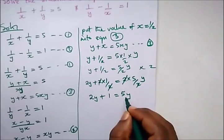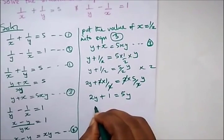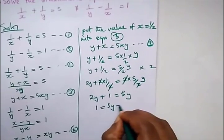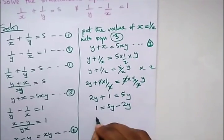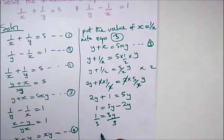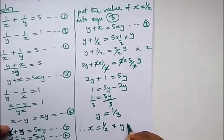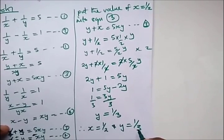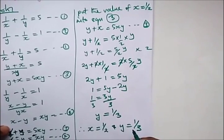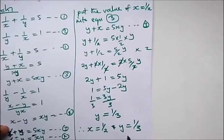Collecting like terms and bringing 2y to the other side: 1 equal to 5y minus 2y, so 1 equal to 3y. Dividing both sides by 3, y is equal to 1 over 3. Therefore, x is equal to 1 over 2 and y is equal to 1 over 3. This is a theory question, so we have to show our workings — that's why this video is quite long. Thank you for staying tuned.